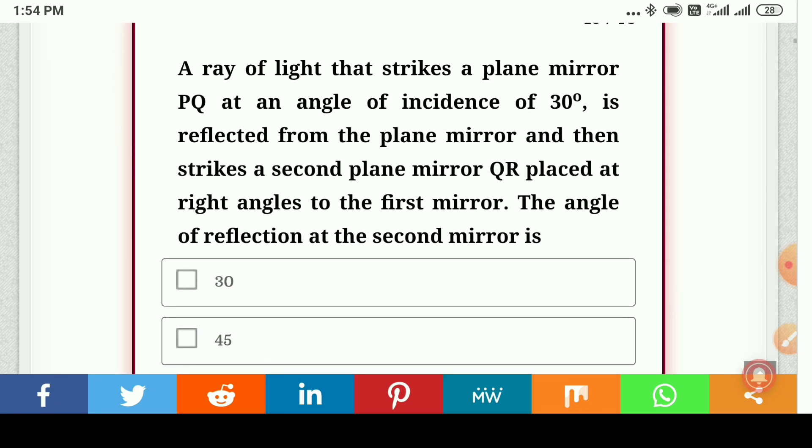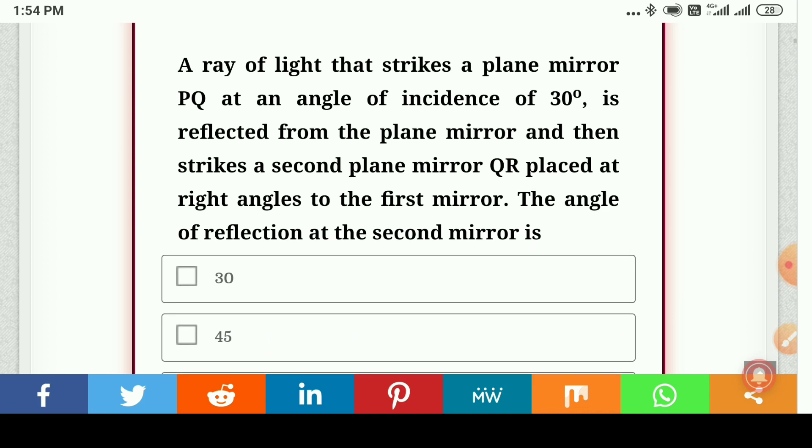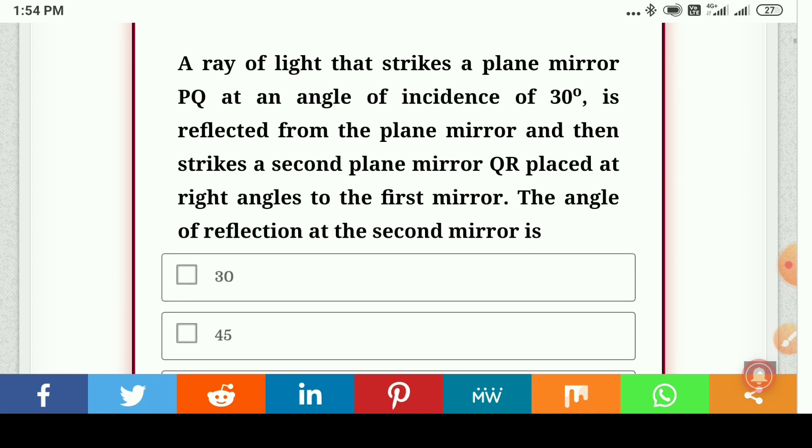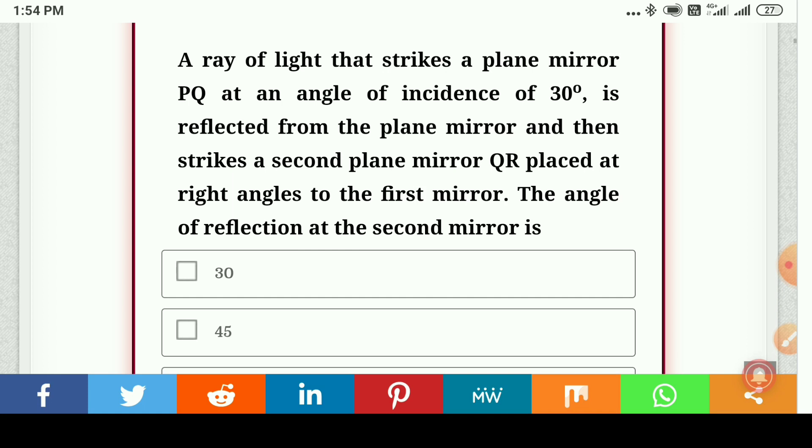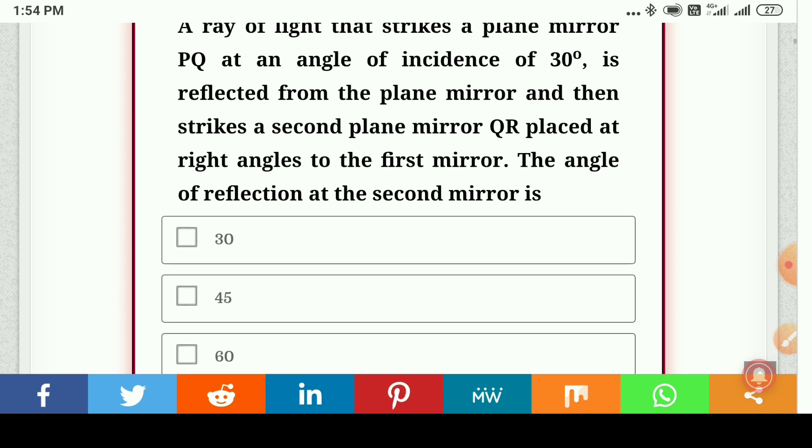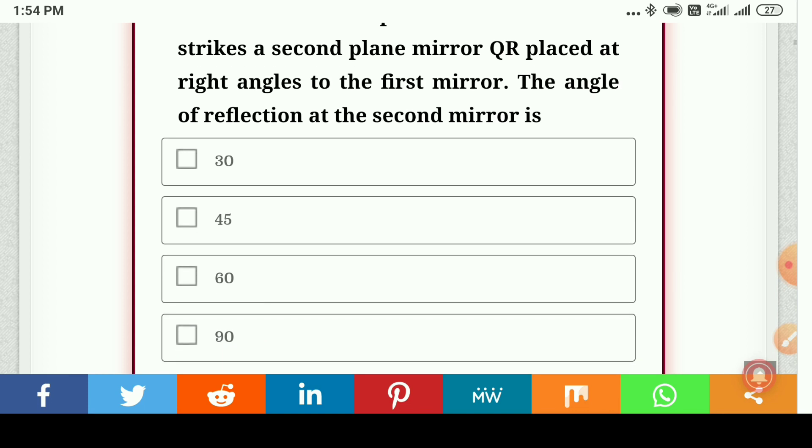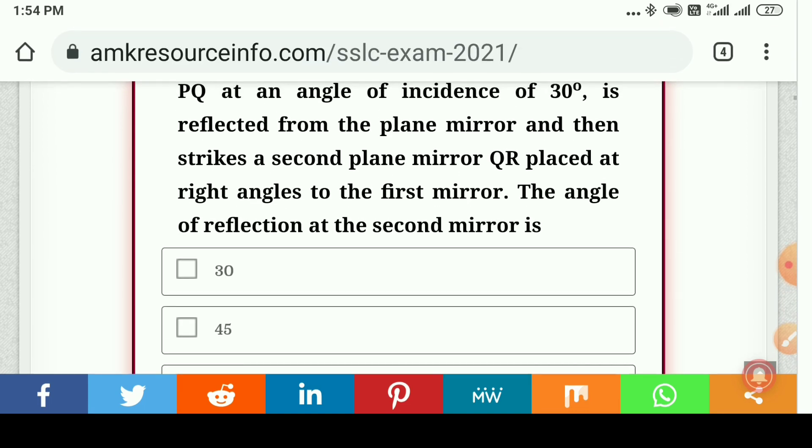A ray of light that strikes a plane mirror PQ at an angle of incidence of 30 degrees is reflected from the plane mirror and then strikes a second plane mirror QR placed at right angles to the first mirror. The angle of reflection at the second mirror is 30, 45, 60, or 90 degrees. So here the answer is 60 degrees.